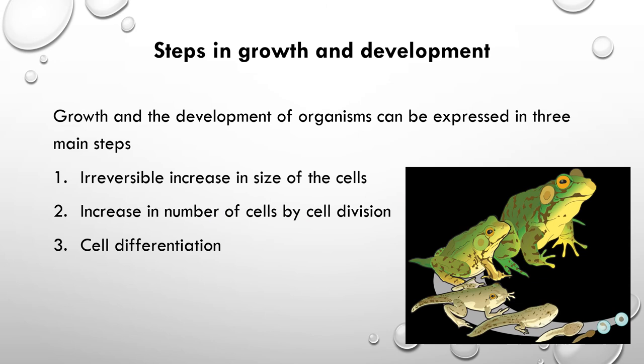If we consider the steps involved in the growth and development of an organism, it can be expressed in three major steps. First, cells increase in size. After reaching maximum size and maximum growth, the cells begin to divide, increasing the cell number. The newly formed cells then differentiate to form different tissues, organs, and organ systems, building up the whole organism. This is the total process involving growth and development.